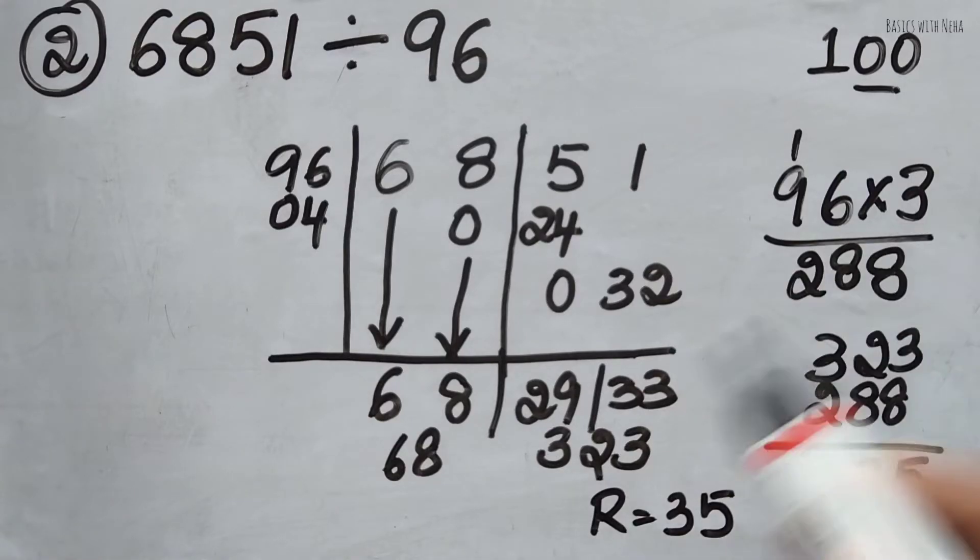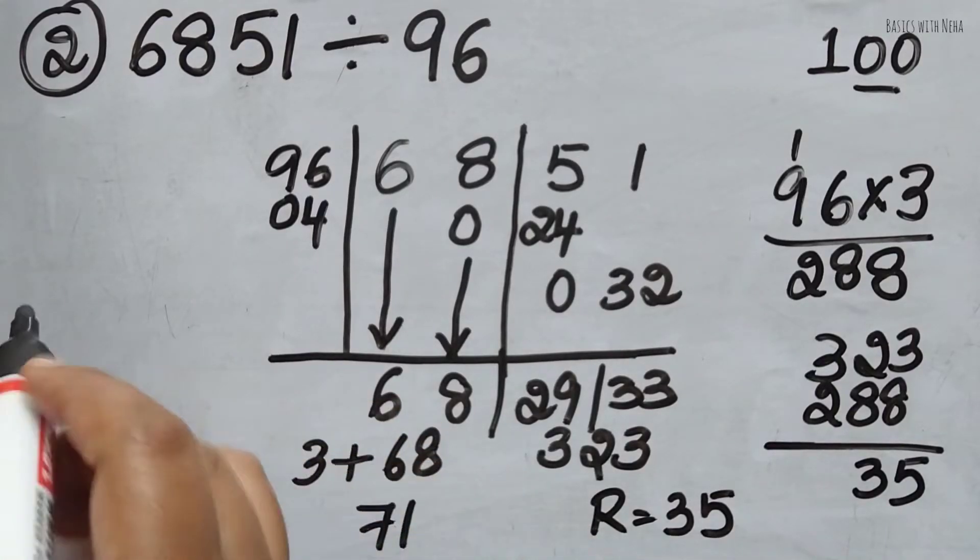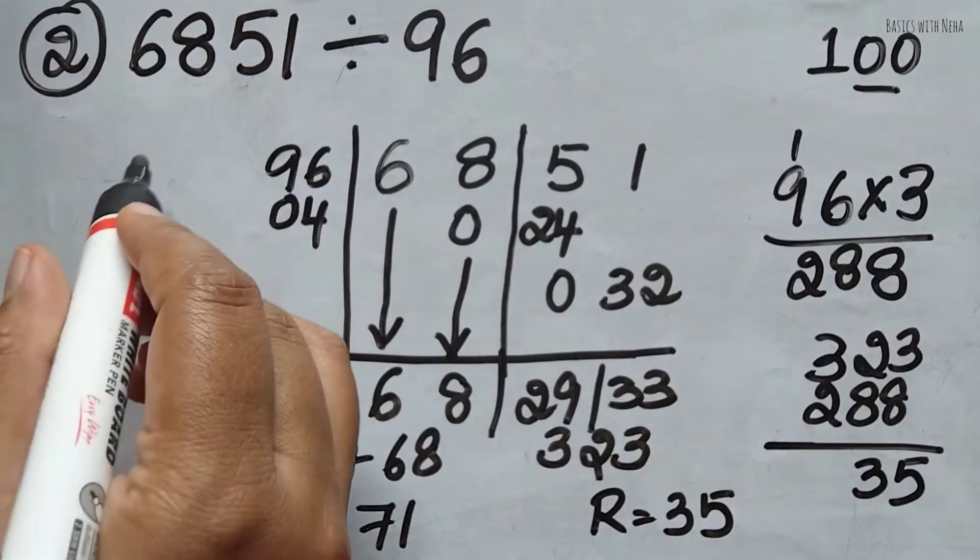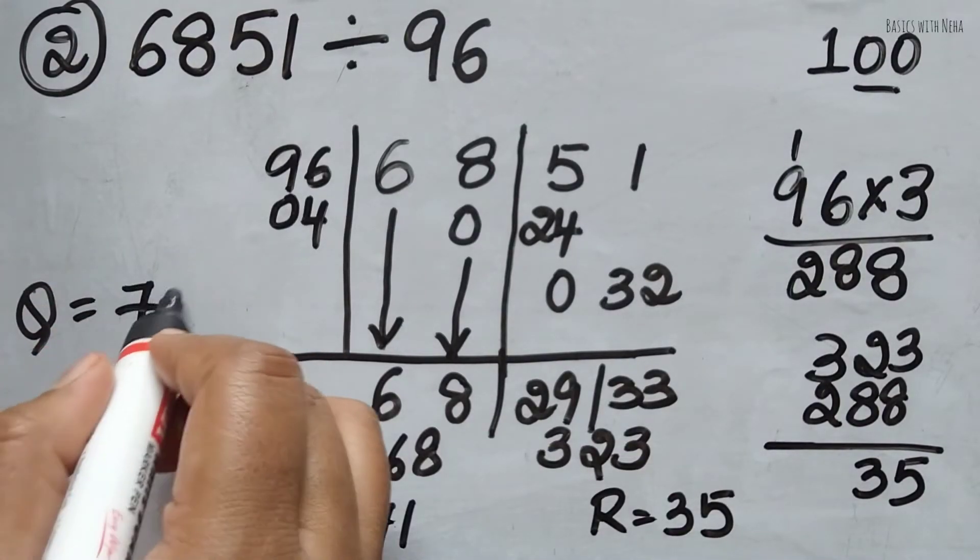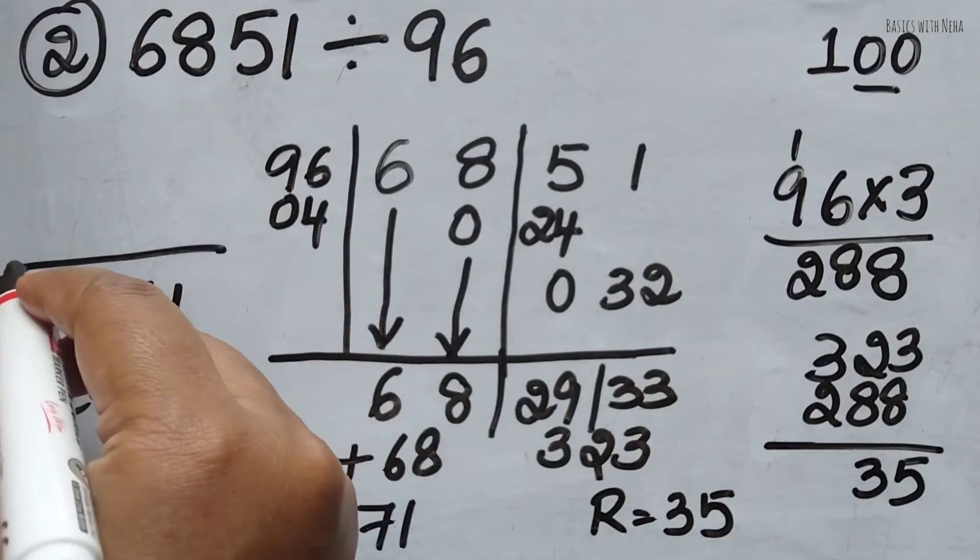And since I've multiplied it with 3, I should add 3 here. So 68, 69, 70, 71. So finally, my quotient to this particular question will be 71 and remainder is 35. So this is my final answer.